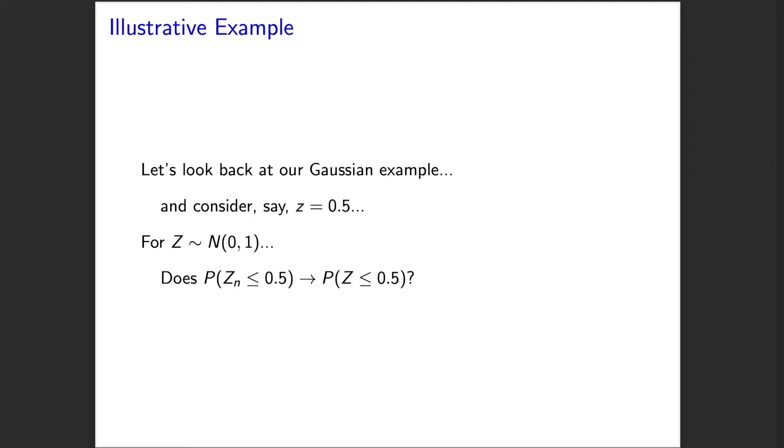Going back to our Gaussian example, let's consider a threshold, say 0.5, and for this limiting random variable cap Z, which is distributed normal 0, 1, we ask this question: does the probability that Zₙ is less than or equal to 0.5 converge to the probability Z, this Gaussian with mean 0 variance 1, is less than or equal to 0.5? And again, we would have to show this not just for 0.5, but for every possible value we could plug in.